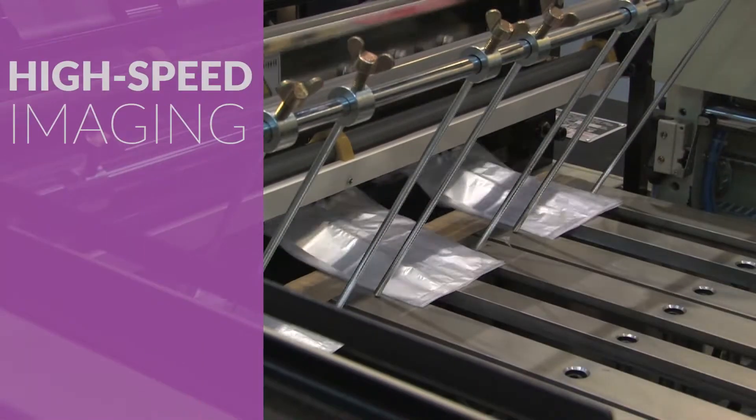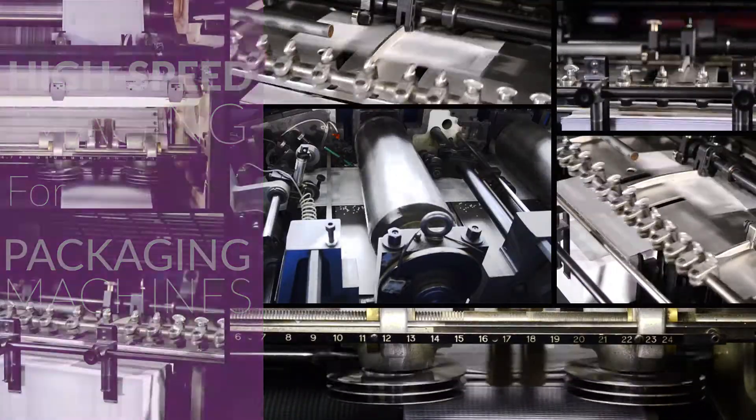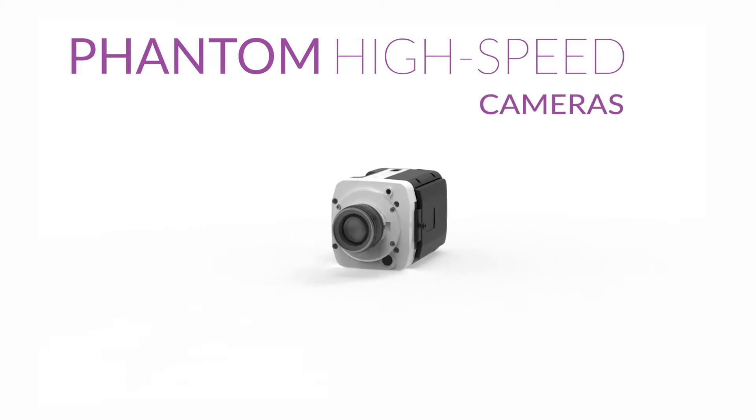Packaging machines move fast, and that's good for productivity, but high-speed rotating and reciprocating machines can be tough to troubleshoot visually when things do go wrong.